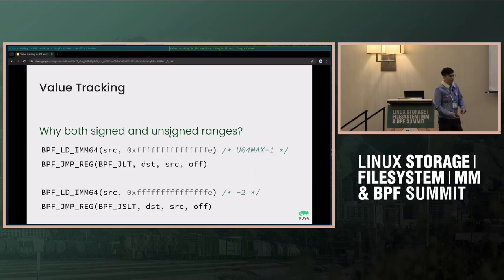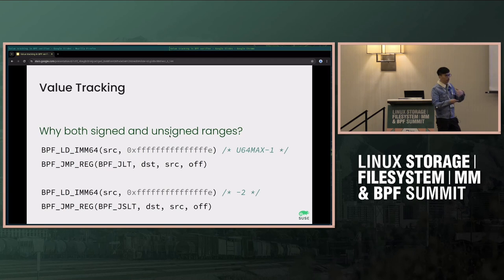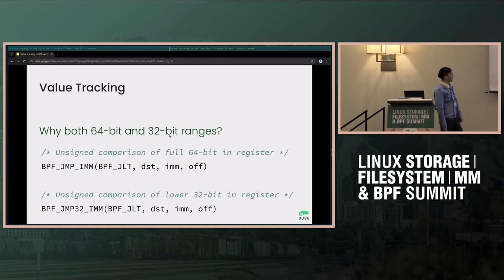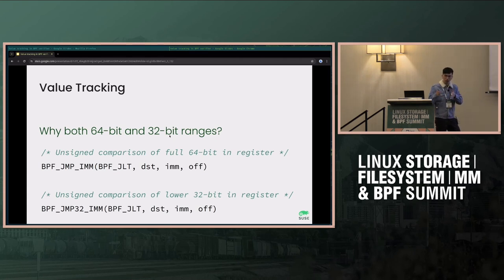The reason we have signed and unsigned ranges is that we have unsigned and signed conditional instructions, and when they operate on the same register, we decided to track both signed and unsigned ranges. The same goes for 64-bit and 32-bit — we have both kinds of jumps: 64-bit jumps and 32-bit jumps that only look at the lower part of the register.